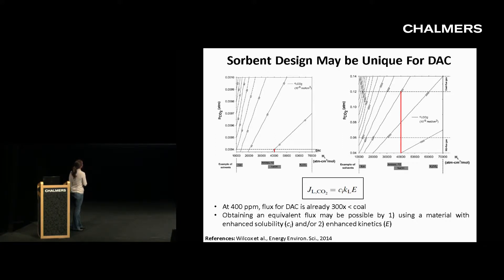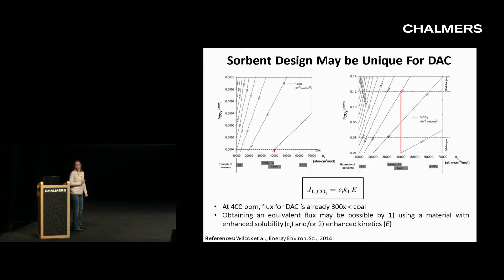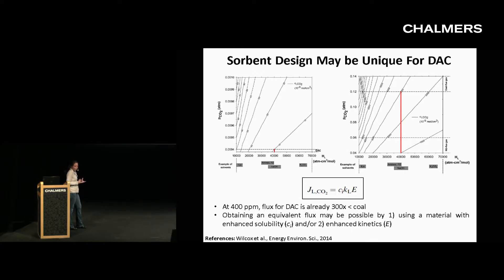For the same chemistry used to separate CO2 from air versus flue gas, for a given Henry's Law coefficient brought up to the DAC line, the interfacial concentration is 10. Take that same chemistry to the flue gas line, and the concentration is around 3,000. This is a disadvantage of direct air capture — we're starting off with a flux already 300 times lower than flue gas. So something has to give in the flux equation: either a Henry's Law coefficient or material with larger capacity, or faster kinetics. The mass transfer coefficient can't change much.